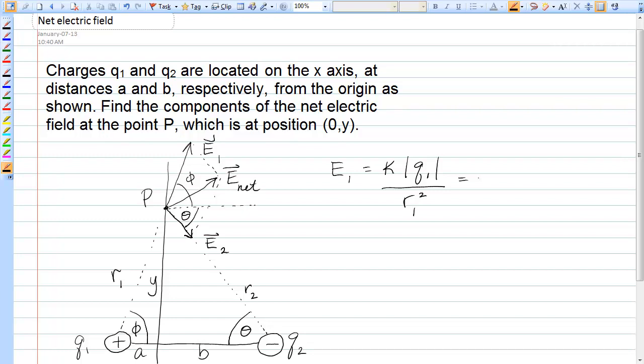And remember, we can only use the letters that are given to us in the problem in our answer. So we can use Q1, Q2, A, B, and Y, but we can't use R1, theta, or phi. So let's get R1 in terms of A and Y, and it would simply be A squared plus Y squared, square rooted squared, so it's just to the 1 power.